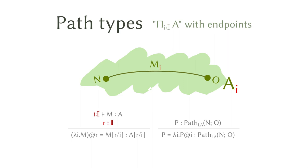If you review the rules for function types, they are really just the same, except that first the domain is the standard interval, and second the path type also writes down the endpoints. So these are the rules for the path types.